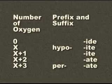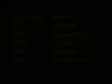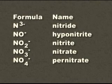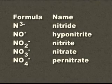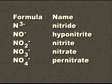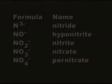Let's try it with the nitrate family. No oxygens make the anion nitride. One oxygen makes the anion hyponitrite. Two make it nitrite. Three make it nitrate. Finally, four make it pernitrate.